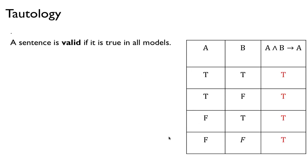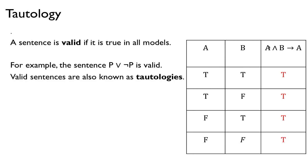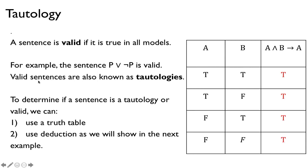A sentence is valid if it is true in all models — all possible assignments. A model is just an assignment of true or false to each propositional symbol. For example, 'A and B implies A' is true everywhere, so it is valid. Another example is 'P or not P' — whatever P is, either P or not P is true. Valid sentences are also known as tautologies. We can use a truth table to check: if you get all true, the sentence is a tautology.